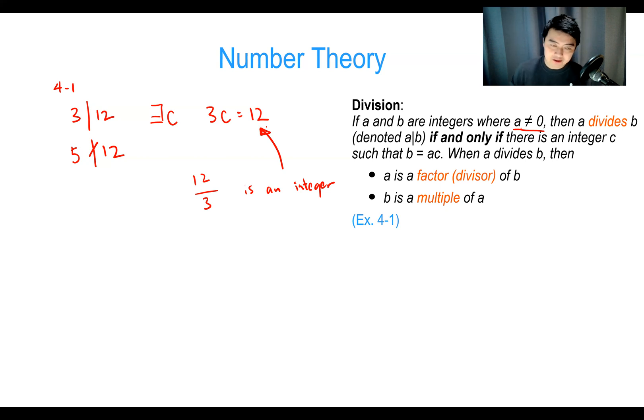You probably saw this in grade school — you start with the number and think of two numbers that multiply to it. For 100: start with 2 and 50. Circle the prime 2, then break 50 into 5 and 10; 5 is prime, and 10 breaks into 2 and 5. This gives the prime factorization 2 × 2 × 5 × 5 — also called the prime factorization of 100.